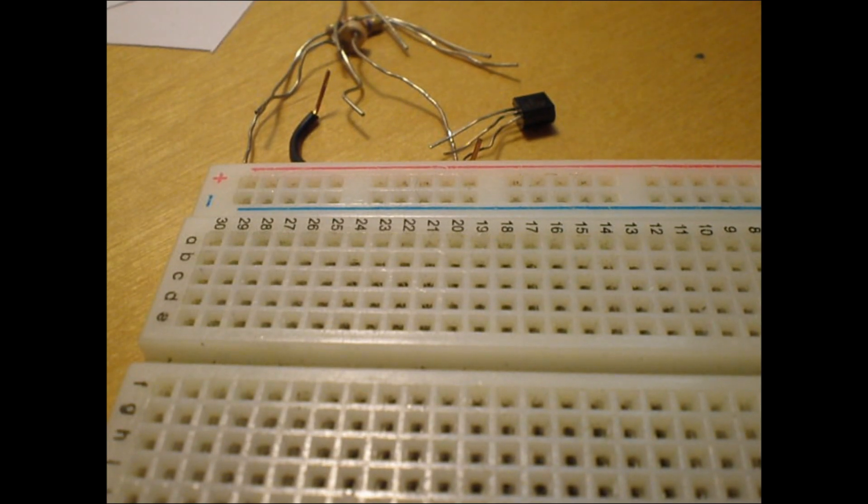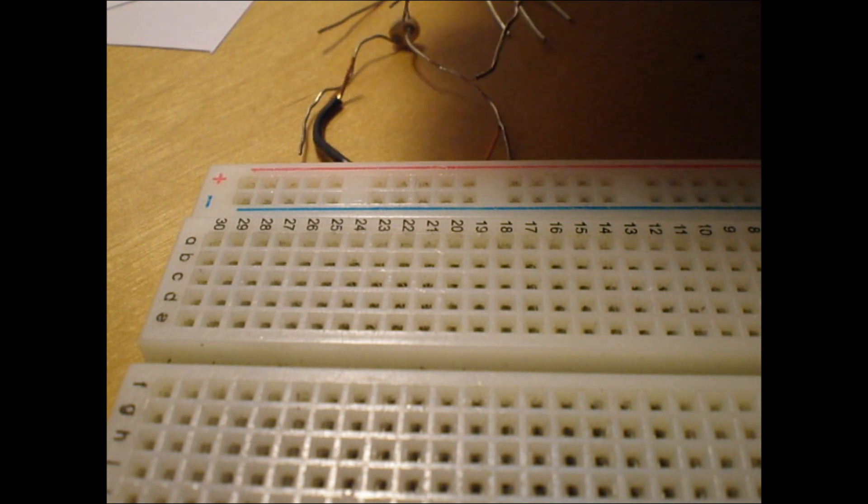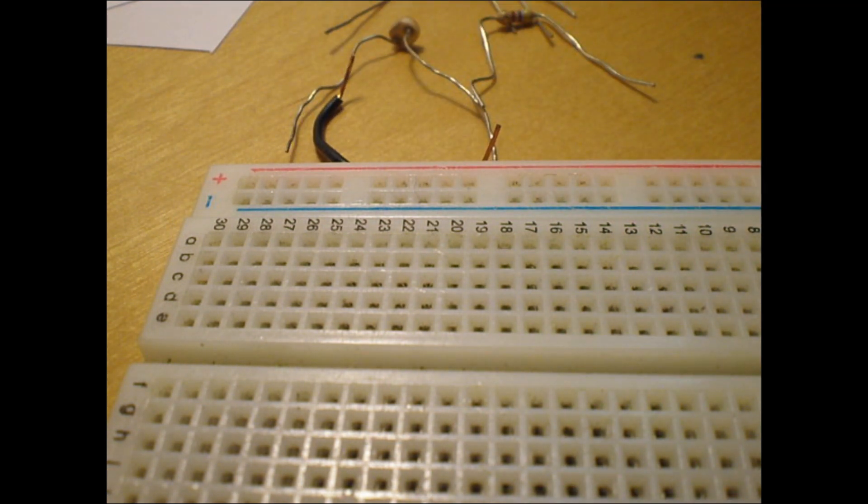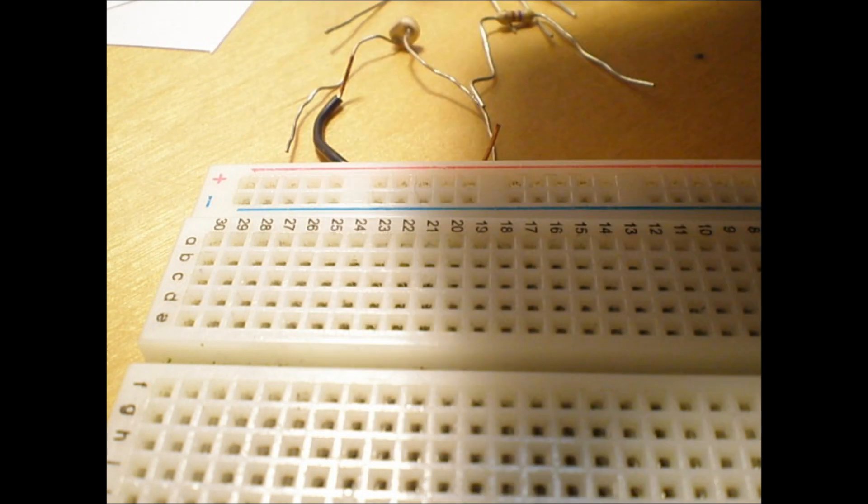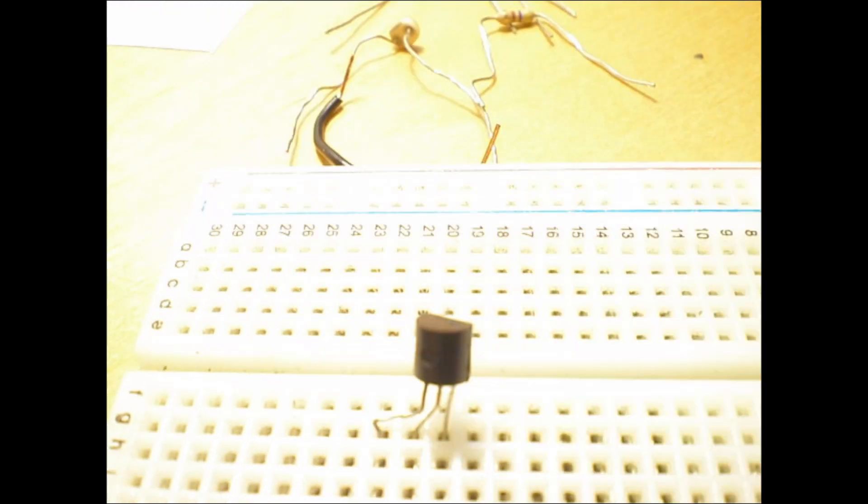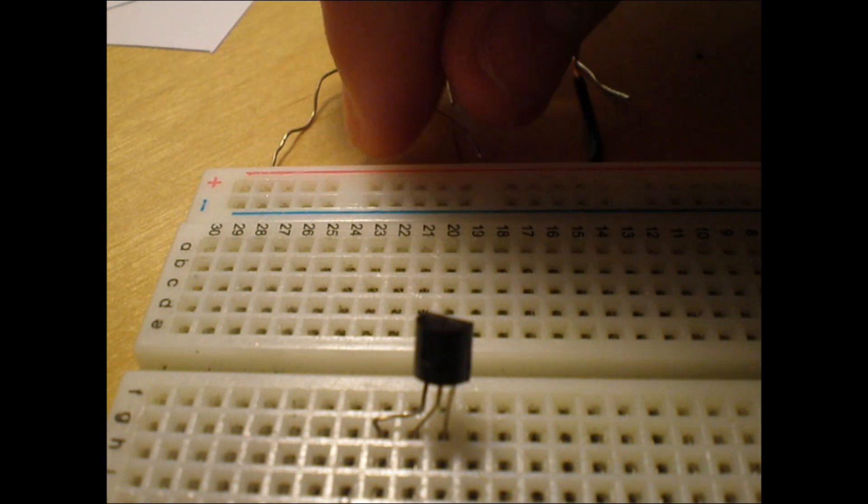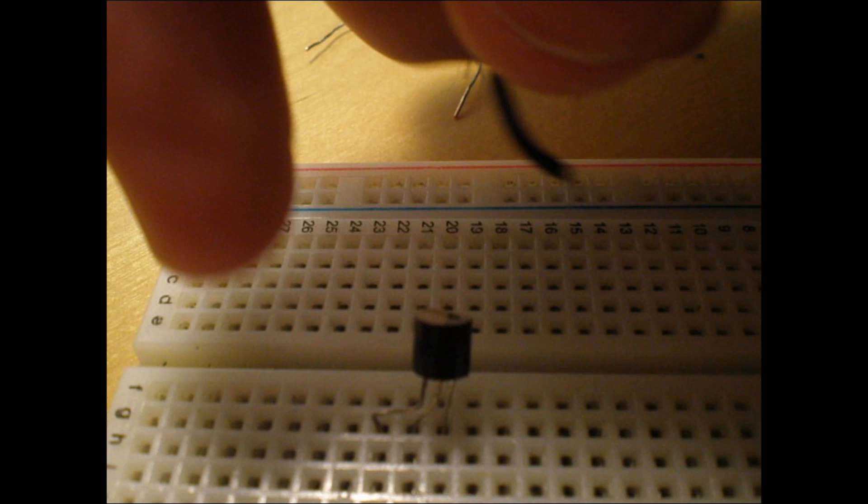Here's an example of how to build a simple transistor circuit. The first thing you want to do is put your transistor into your breadboard, like this. The second thing you want to do is connect your collector pin to your ground pin, because this is an NPN transistor.